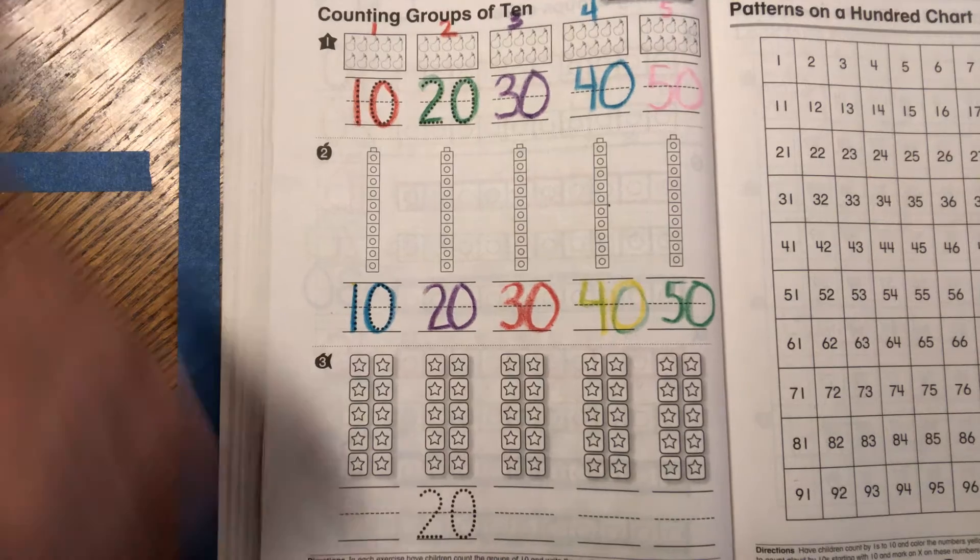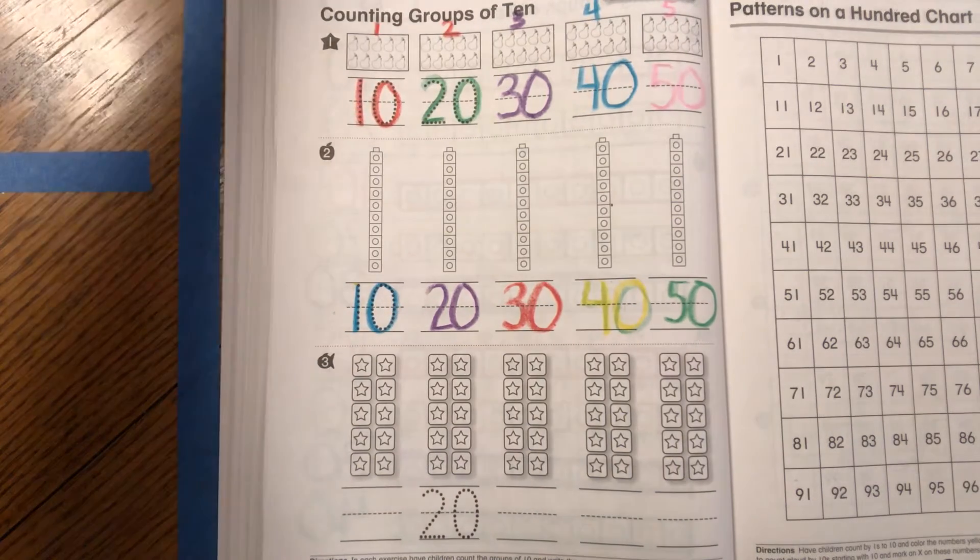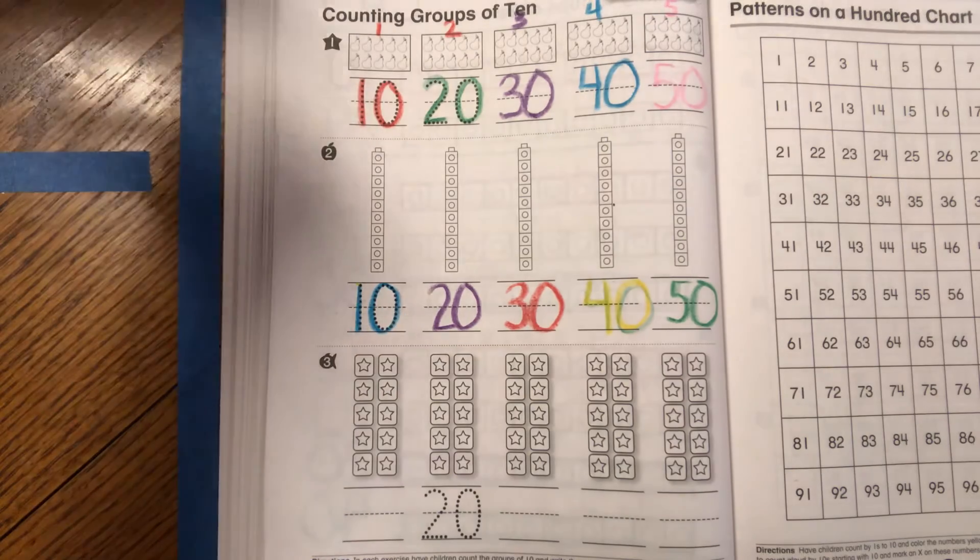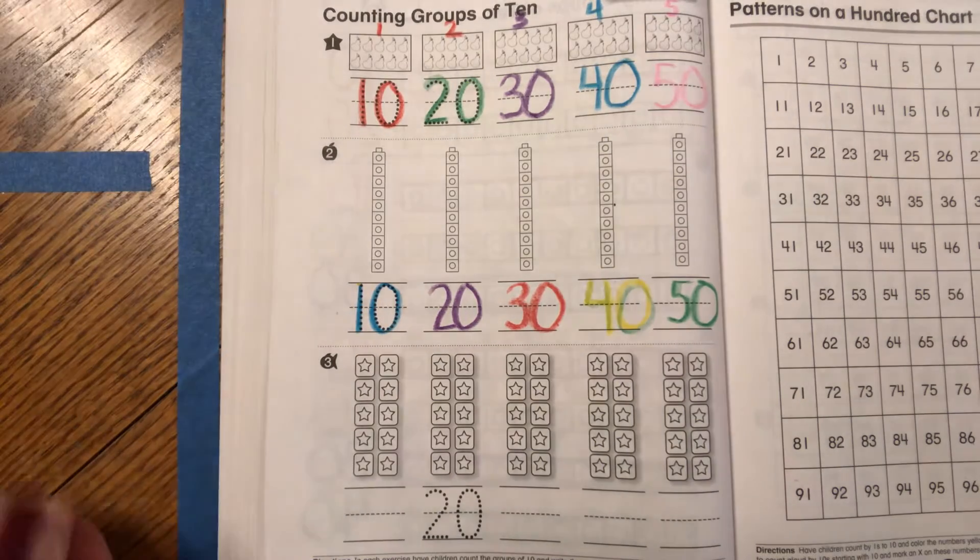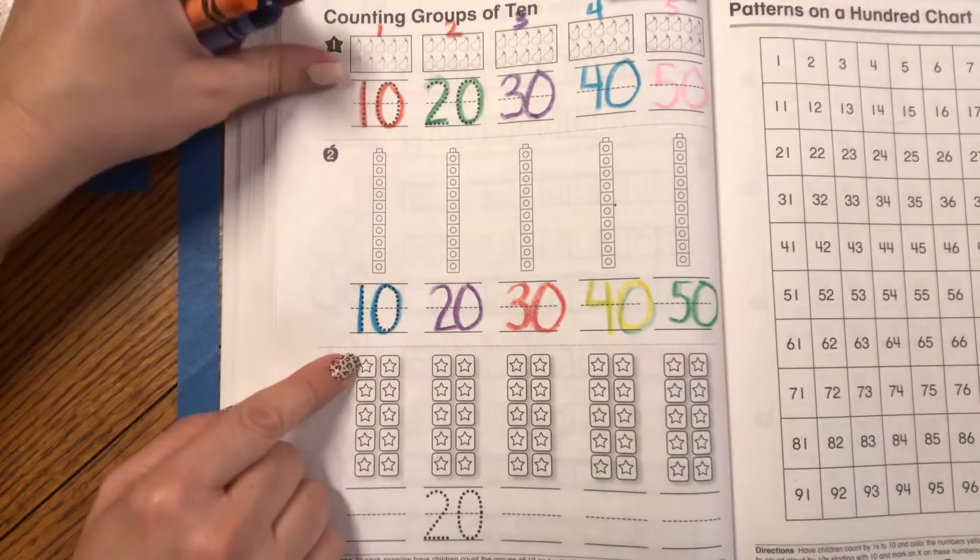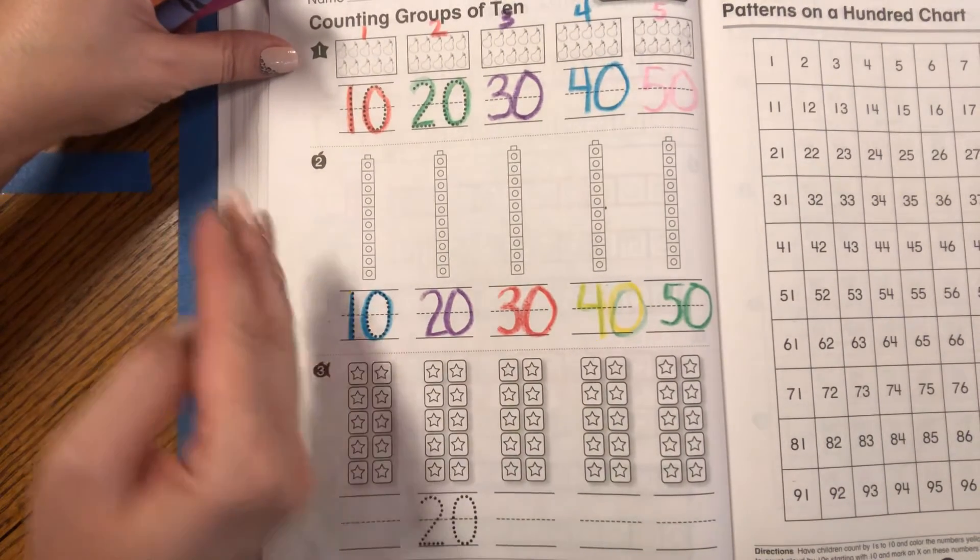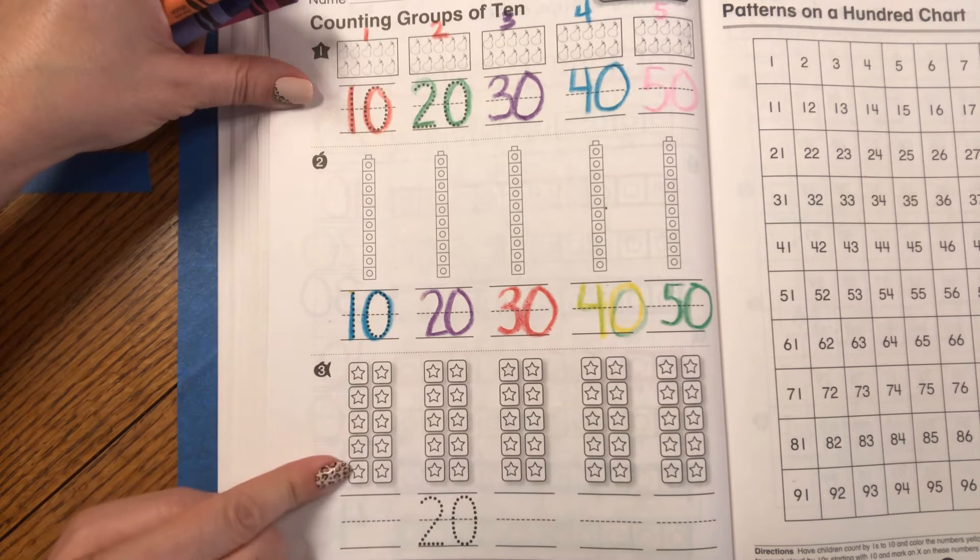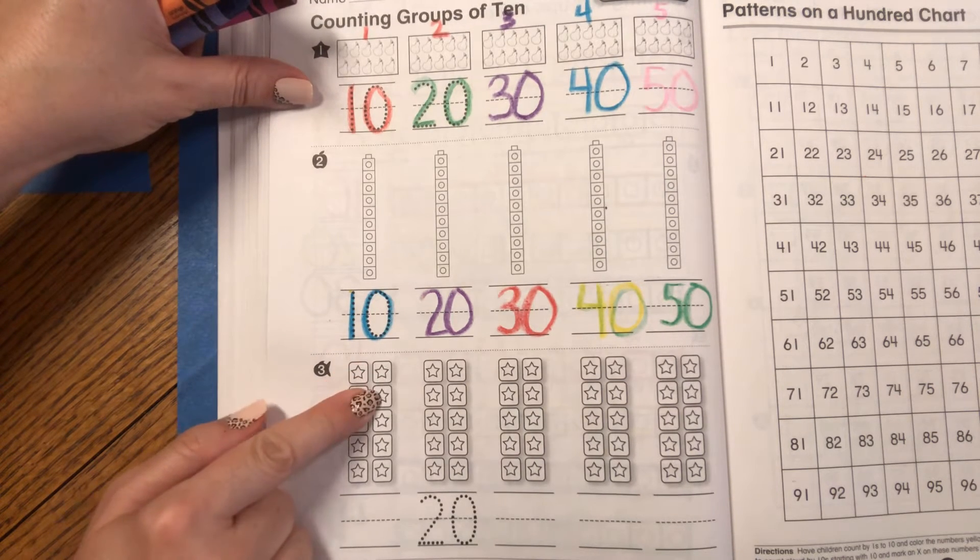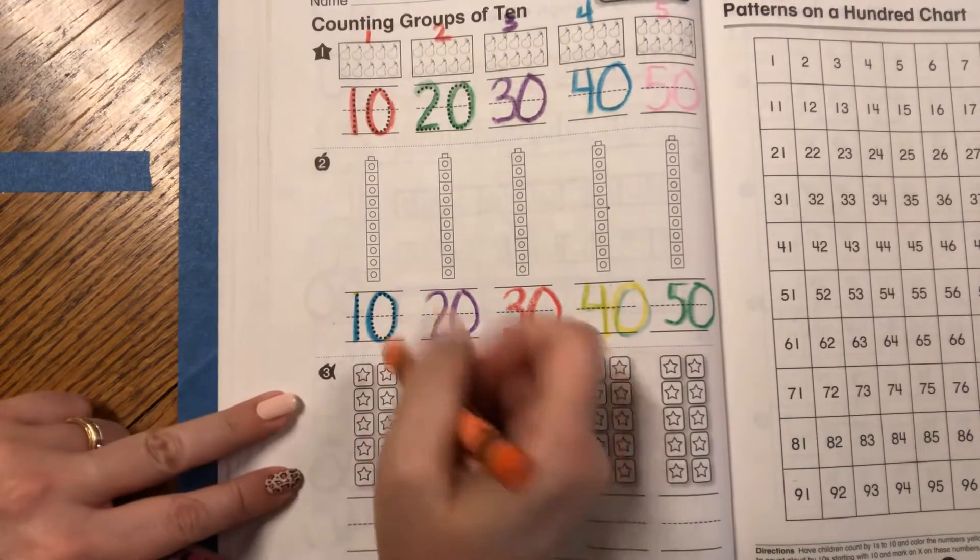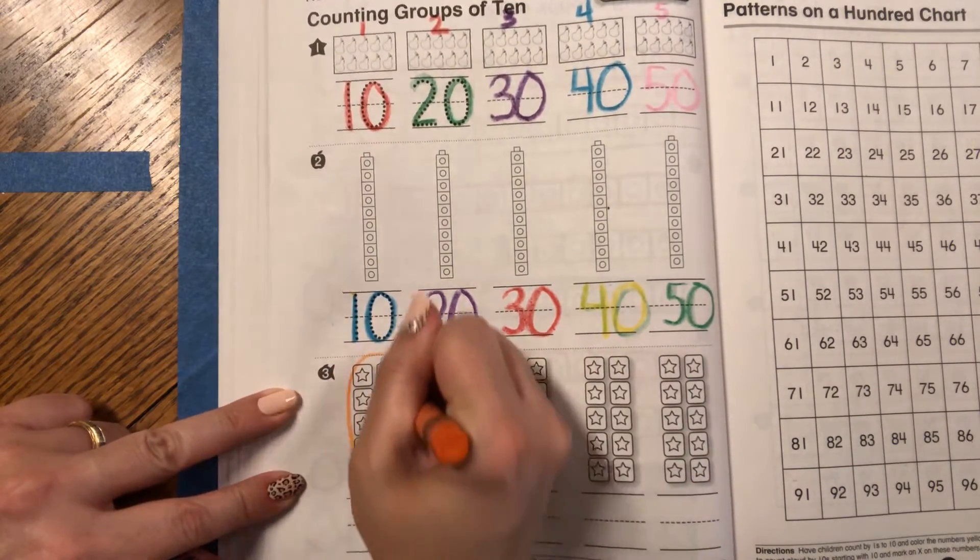Let's take a look at these groups of stars now. Maybe I'll switch up some of my colors. All right. Let's take a look at these groups of stars. So these are like 10s frames that are turned to be vertical. One, two, three, four, five, six, seven, eight, nine, 10. So there's one group of 10.